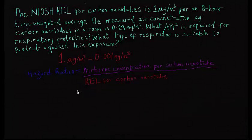First, learners should make the appropriate unit conversion from micrograms per cubic meter to milligrams per cubic meter. So, 1 microgram per cubic meter equals 0.001 milligram per cubic meter. Then, learners should proceed by dividing the measured airborne concentration for carbon nanotubes by the given REL for carbon nanotubes. Thus, the hazard ratio equals 0.23 milligram per cubic meter divided by 0.001 milligram per cubic meter, and the answer is 230.